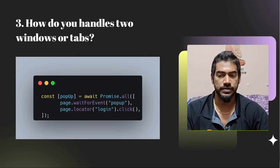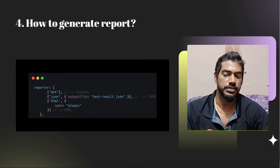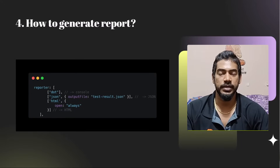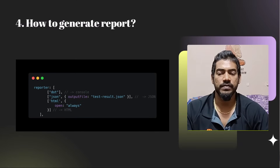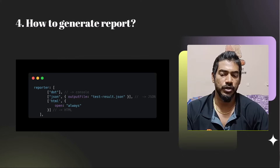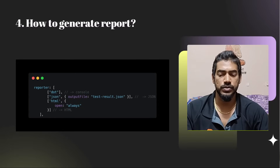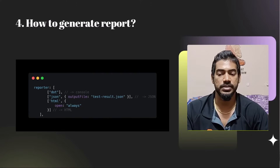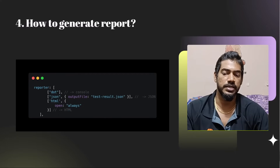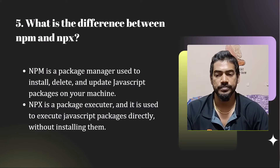How to generate a report? We can generate the report from the Playwright config file or pass it as a command line argument. Within the reporter configuration we have multiple options — this is known as a tuple. Within the square brackets we have another square bracket. If you want to see reports only on the console you can use 'dot'; if you want to store it as a file you can use JSON, HTML, or XML.